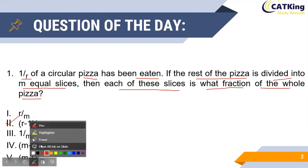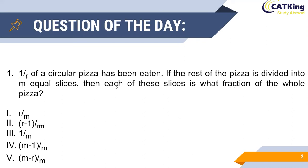So as it is given in the question, 1 by r of a pizza has been eaten. Hence when the whole pizza is represented by 1, the amount of pizza not eaten until now is equal to 1 minus 1 by r, that is equal to r minus 1 the whole divided by r.